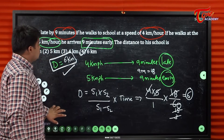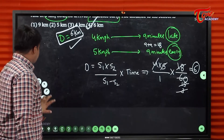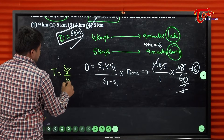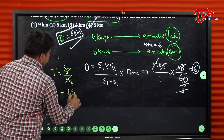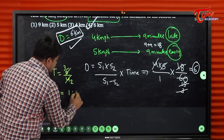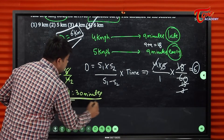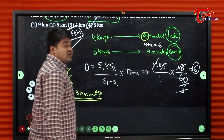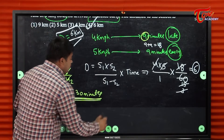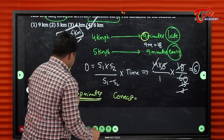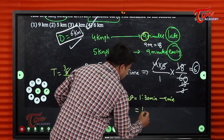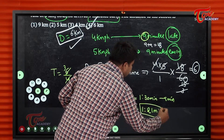Correct time: distance 6 km at 4 km/h = 6/4 = 3/2 = 1.5 hours = 1 hour 30 minutes. Correct time = 1 hour 30 minutes minus 9 minutes (late) = 1 hour 21 minutes. So the correct time is 1 hour 21 minutes.